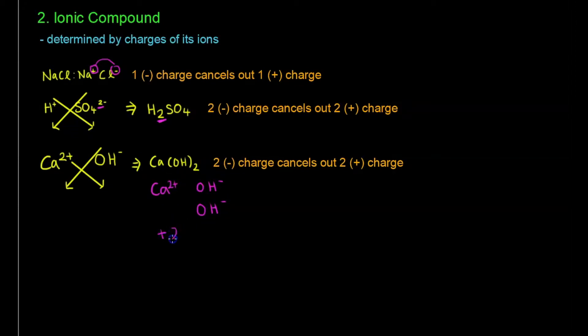So the net charge here is plus 2, this is minus 2, so it cancels out to 0, which is what we want, a neutral charge. And that's why this bracket refers to this OH only, it's not for this Ca. So it's bracket OH bracket 2, this OH there's 2 of it, OH, OH.